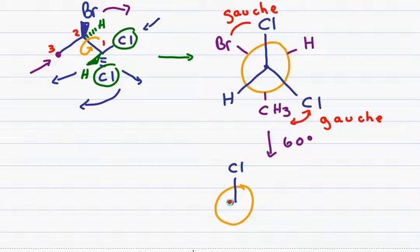I will keep the front carbon as it is. Given that I rotated the rear carbon clockwise 60 degrees, I get a hydrogen behind the chlorine, I get a methyl group behind the hydrogen and then I get a bromine behind the chlorine.